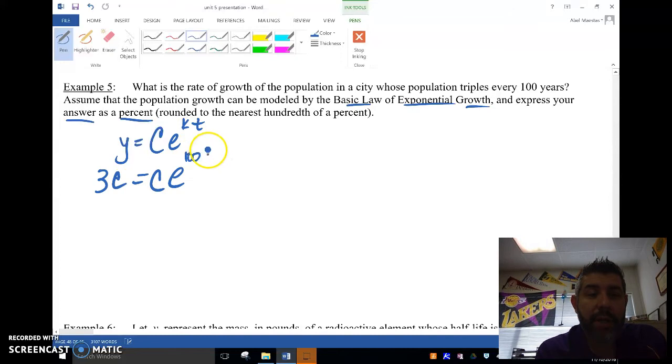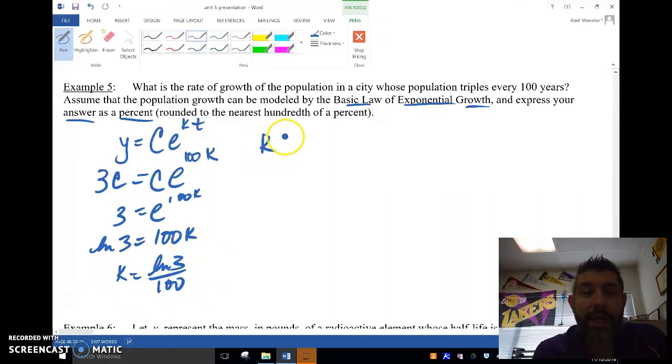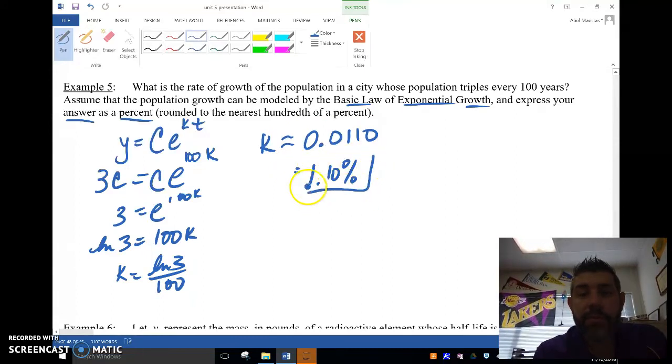We're going to put 100k there because it's 100 years. Then we're going to solve this by dividing by C and taking the ln of both sides. So k equals ln of 3 over 100. This is the rate of growth, so we're going to put that in a calculator and that's approximately 0.0110, which is 1.10 percent.